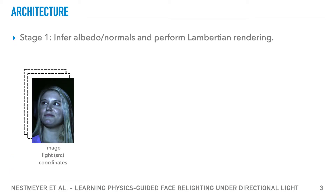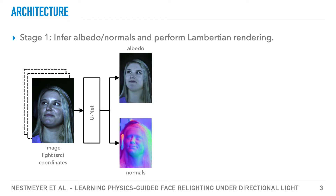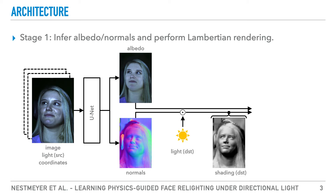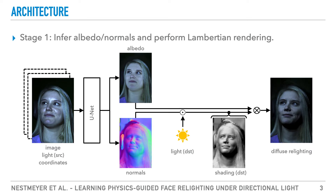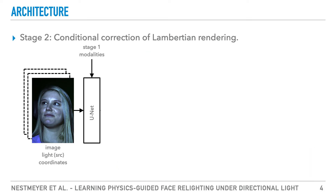Our architecture is best visualized in two stages. Stage 1 infers the two intrinsic components albedo and normals from the input image. Given a target light direction, we can then compute shading from the normals and multiply with the albedo estimate to obtain a diffuse relighting.